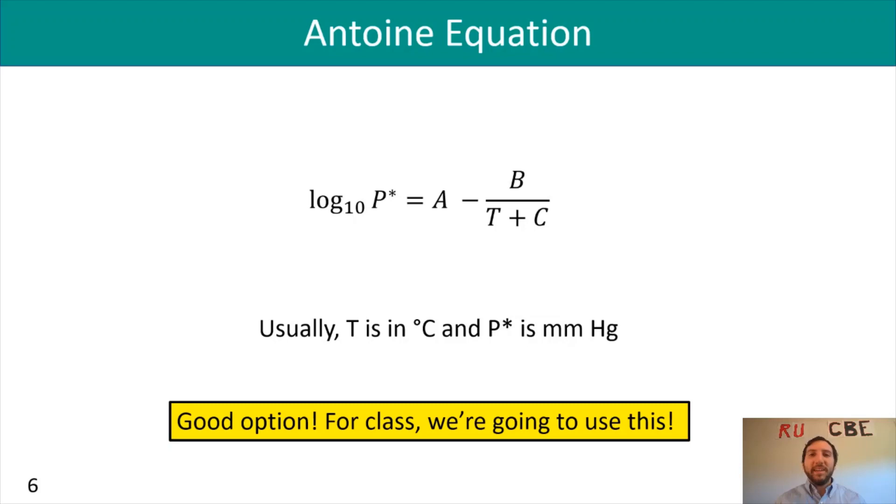A, B, and C are constants that are very dependent on the compound you're using. Every compound will have a different set of A, B, and C, and it actually depends on who's providing those constants as to what units you should be using for T and P*. For the set of Antoine equation constants I've provided, P* is in millimeters of mercury and T is in degrees Celsius. Whenever you're obtaining this information from a table, pay attention to make sure you have the right units.